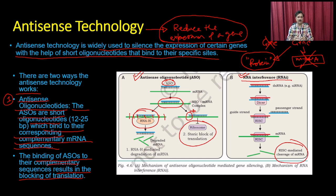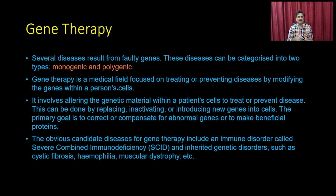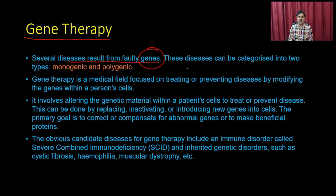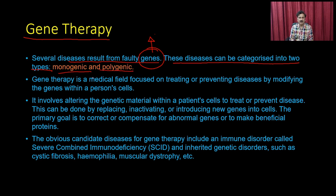Let us move on to the next topic: gene therapy. Several diseases result from faulty genes. Gene therapy is a medical field focused on treating or preventing disease by modifying genes within a person's cells. Diseases can be categorized into two types: monogenic and polygenic. It involves altering genetic material within a patient's cells to treat or prevent disease.